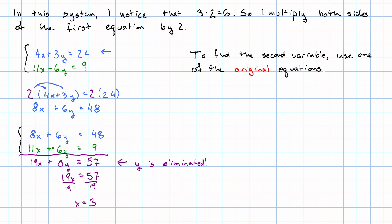To find the value of the second variable, we should use one of the original equations, not one of the equations that we've manipulated. Why? Because if we made a mistake somewhere in the manipulations, using the manipulated equations to find the second variable will make that harder to catch.